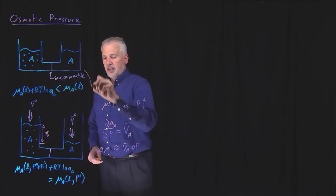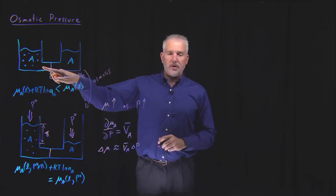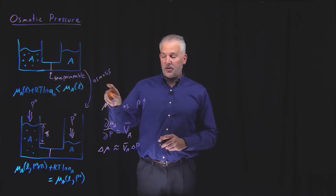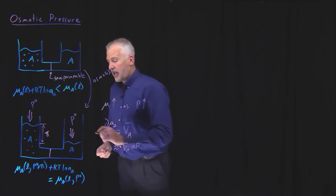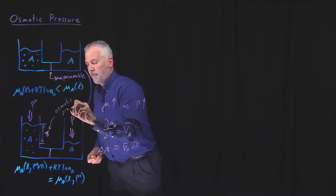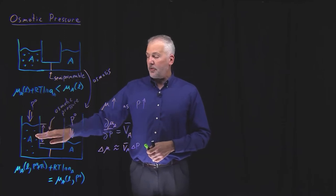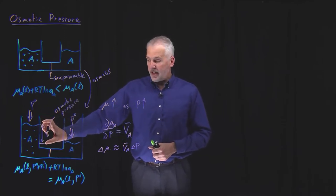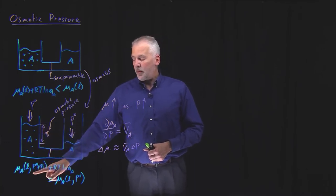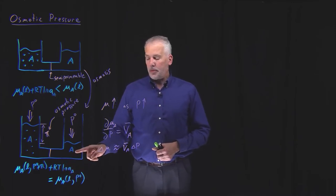The process of solvent moving through the semipermeable membrane from the pure solvent side to the solution side is called osmosis. The osmotic pressure is specifically the additional pressure needed to stabilize the system — to balance the chemical potential so that the side with elevated pressure and solute concentration equals the chemical potential of the pure liquid.